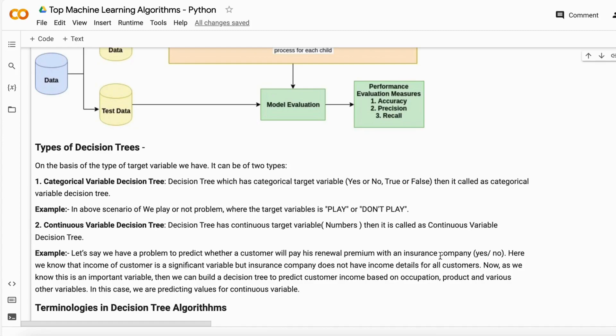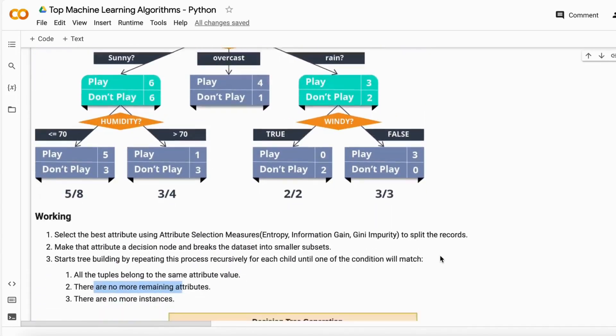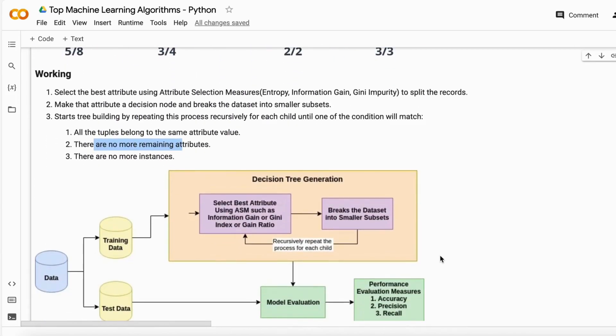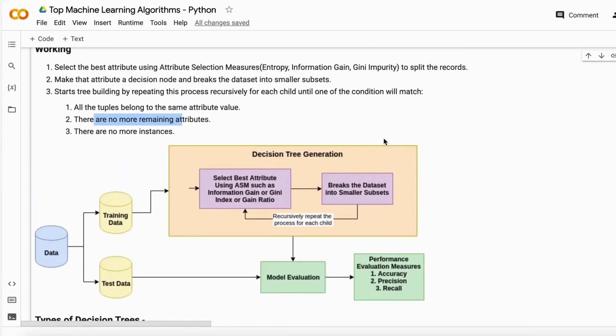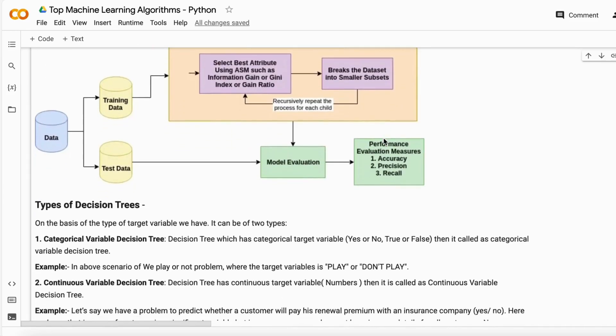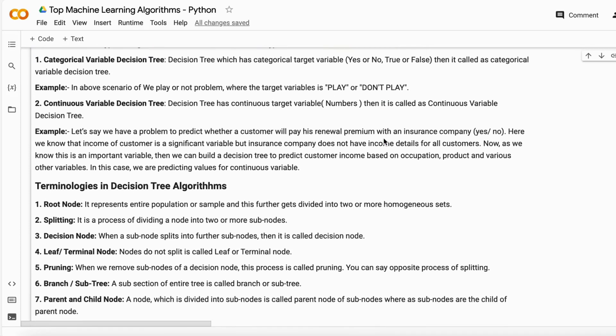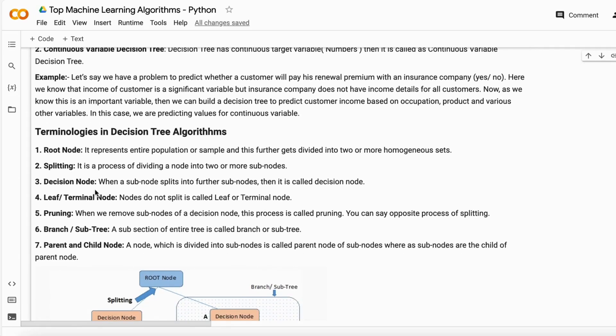So I hope you guys completely understand about this, that how decision trees work internally at a very high level and on which base it splits the nodes. It puts the node on basis of the high information gain and low impurity.